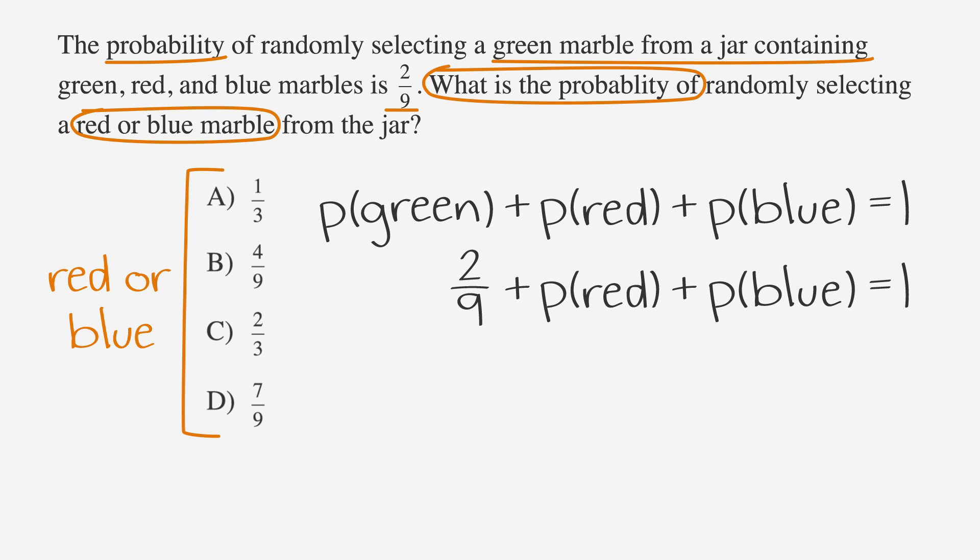We can isolate the variables by subtracting two-ninths from each side, which means that the probability of choosing a red marble plus the probability of choosing a blue marble is seven-ninths. And since we don't care whether we choose a red marble or a blue one, our probability of choosing a red or blue marble also equals seven-ninths. Looking at our answer choices, this matches answer choice D, which is seven-ninths.